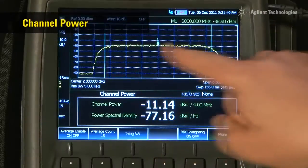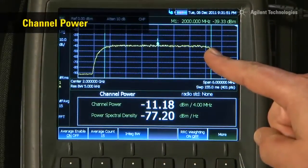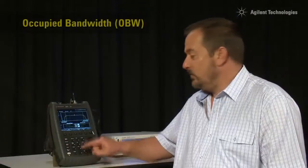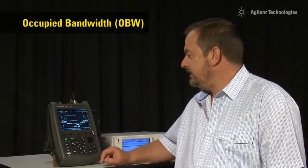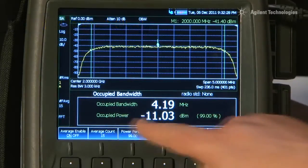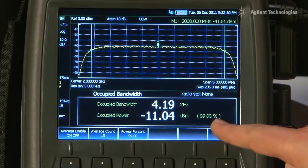The FieldFox will automatically measure channel power of modulated transmissions, such as this spread spectrum WCDMA signal. We can also measure the occupied bandwidth of the signal. Here you can see the occupied bandwidth is 4.2 MHz, and the power is minus 11 dBm.